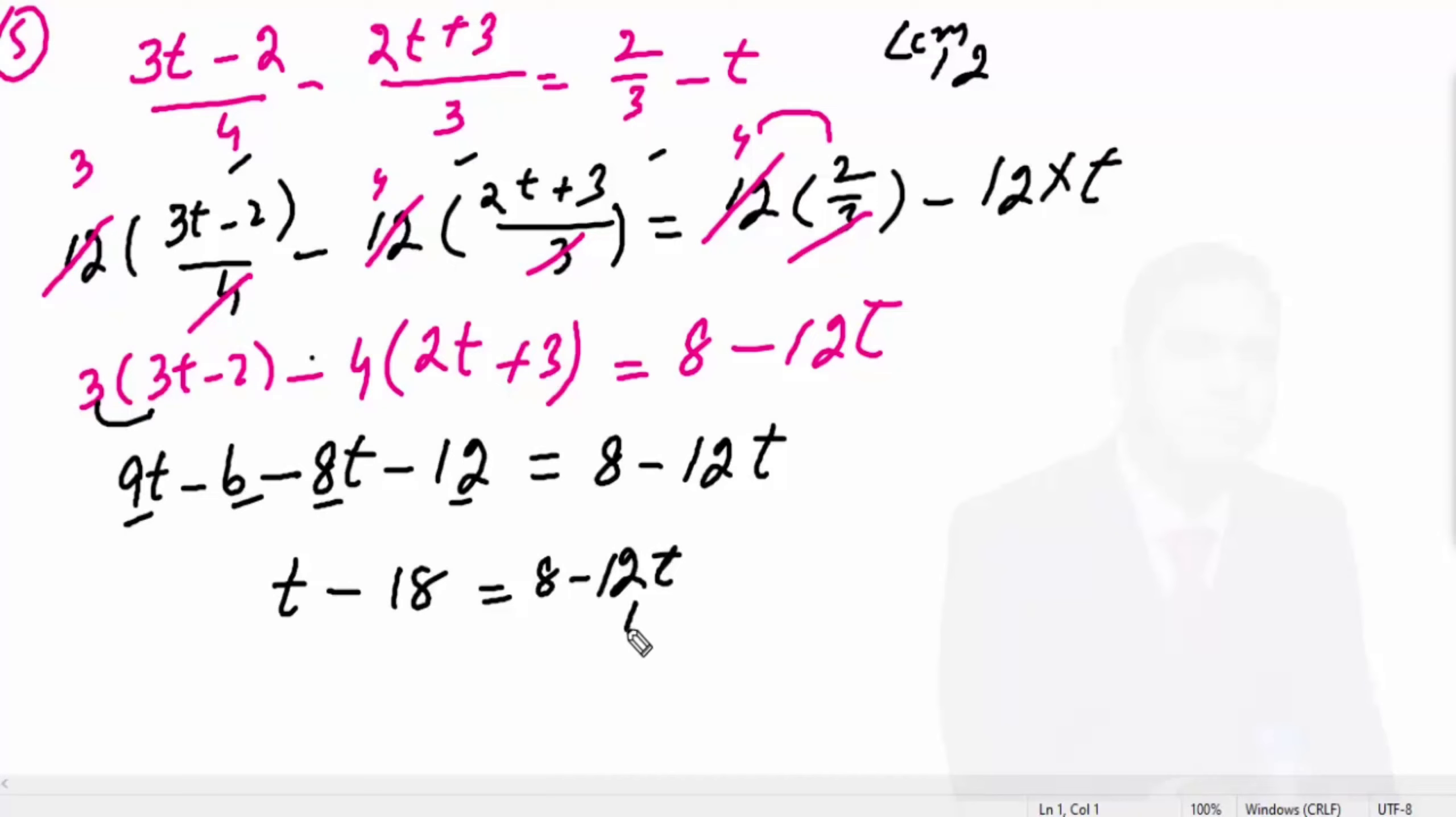Now shift this 12 here. t plus 12t, 8 and plus 18. This was minus, so it becomes plus. This gives us 13t equal to 26.